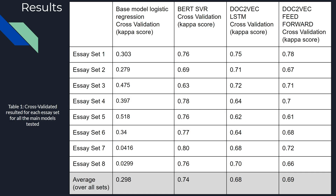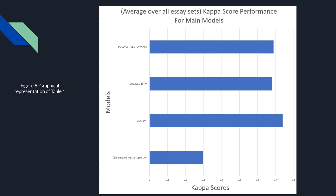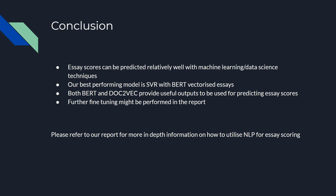For our results, we see that all our models outperformed the baseline model. In particular, BERT with support vector regression performs the best out of all of them, and feedforward neural networks seem to perform better than Doc2Vec. These results are all five-fold cross-validated, and here's a visual representation of the results table. In conclusion, every model performed better than the baseline. BERT and Doc2Vec produce useful outputs. Further fine-tuning details can be found in our report. Thank you.